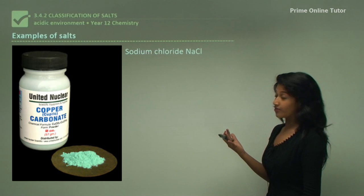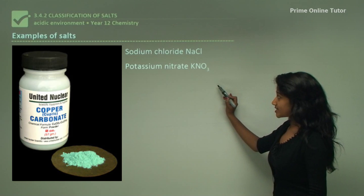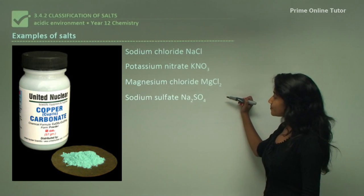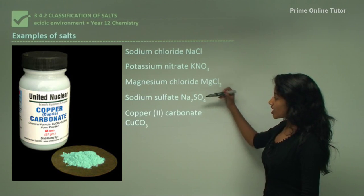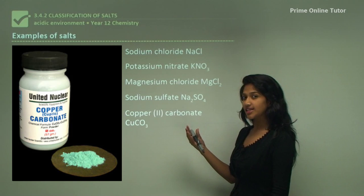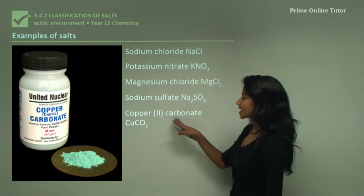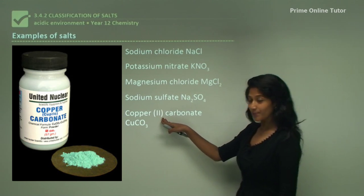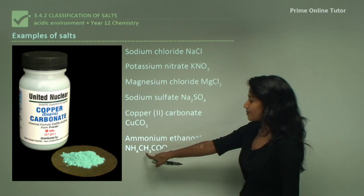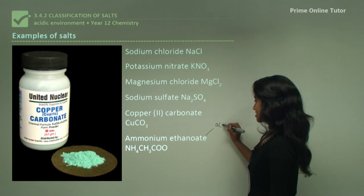Some examples of salts would be sodium chloride (NaCl), potassium nitrate, magnesium chloride, sodium sulfate, copper(II) carbonate, and ammonium ethanoate. Ethanoate is the same as the acetate anion.